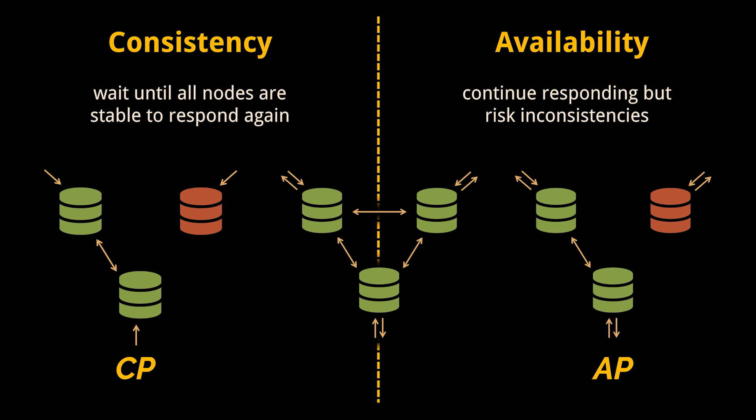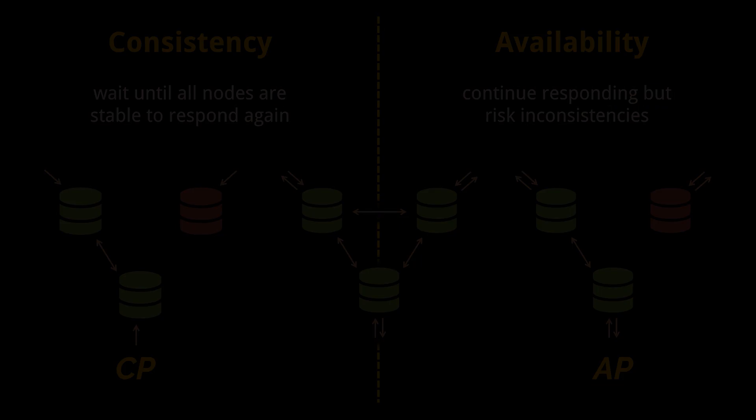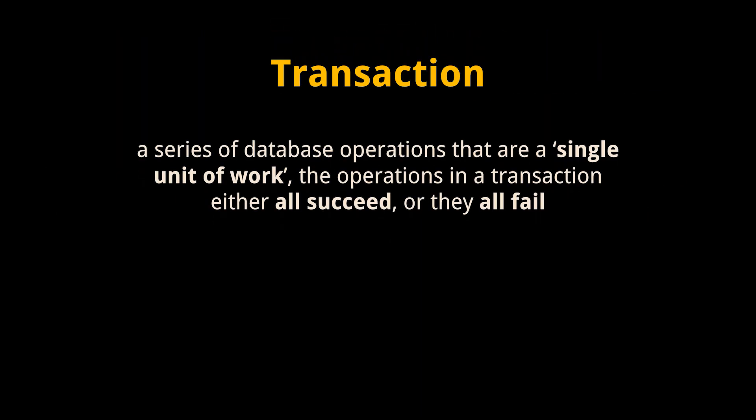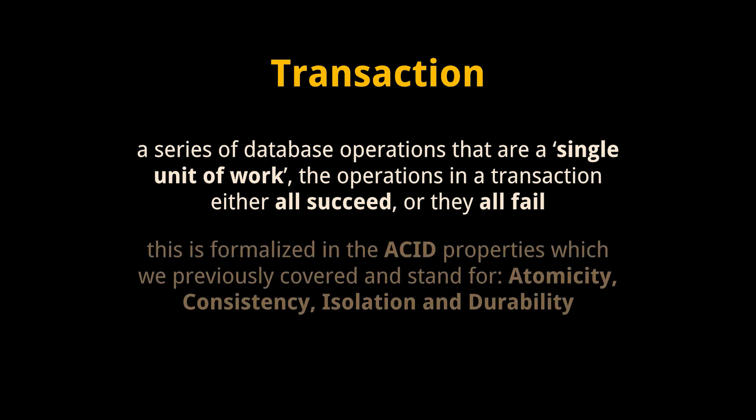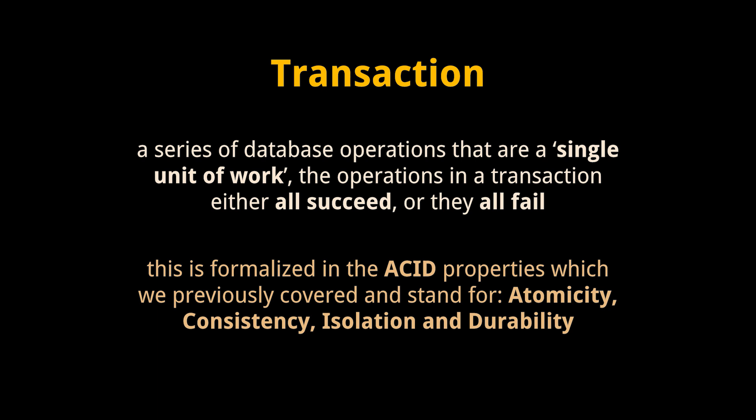A transaction is a series of database operations that are a single unit of work. The operations in a transaction either all succeed or they all fail. This is formalized in the ACID properties — atomicity, consistency, isolation, and durability — which we previously covered. These properties should be satisfied no matter the type of database you are using.